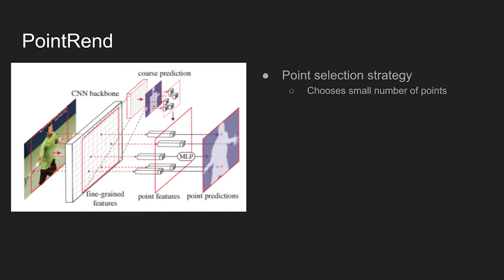The overall process can be divided into three steps. First, the PointSelection strategy chooses a small number of real value points to make predictions. This avoids excessive computation for all the pixels in the high-resolution output grid.